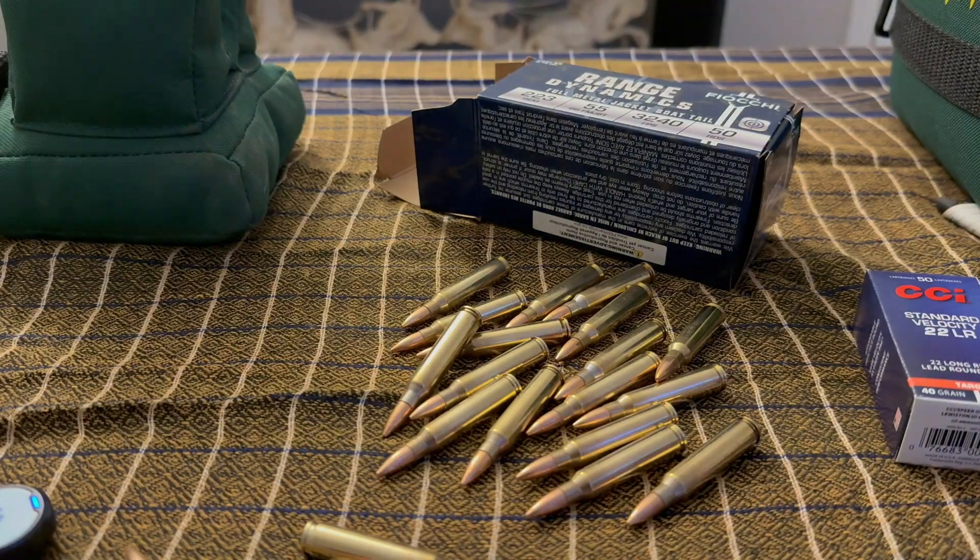Unlike the 5.56 comp rifle, this .22LR bolt action doesn't send as many rounds downrange with as rapid of a procession. And also unlike the 5.56, the rounds it does send downrange behave a little differently as they come out of this heavy cold hammer forged 20.5 inch barrel with a 1 in 16 twist rate.